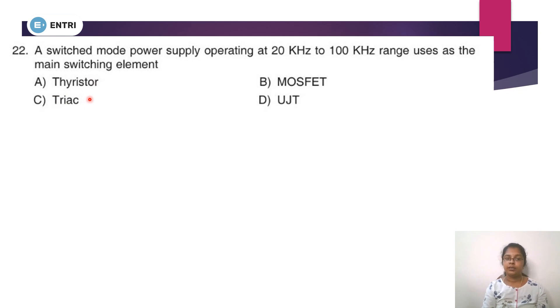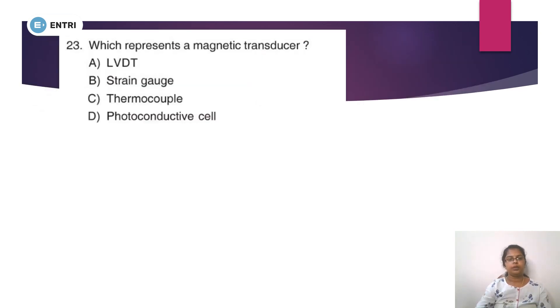Option A, Thyristor - SCR switching element is used. Option B, MOSFET - MOSFET switching element is used. TRIAC and UJT. The right answer is B, MOSFET. Because MOSFET can switch in the 20 kHz to 100 kHz range. Saturation cut-off MOSFET compared to BJT - BJT is switched to work as a Bipolar Junction Transistor switched to work. And this particular range, 20 kHz to 100 kHz in this range, it is efficient. It is switching MOSFET.